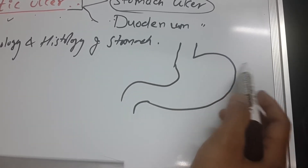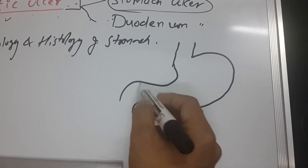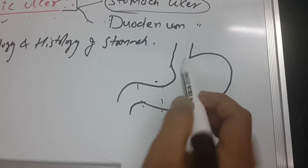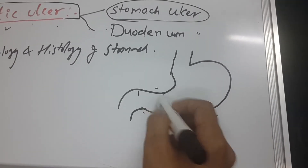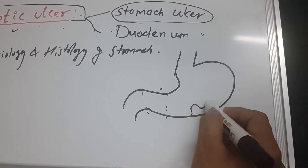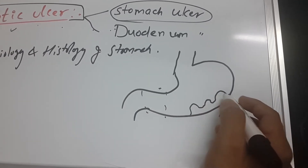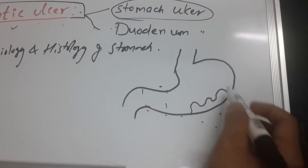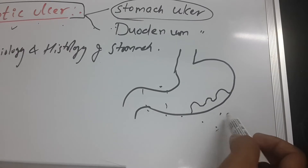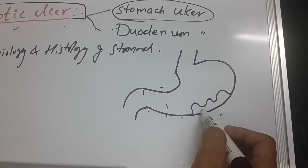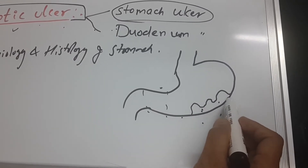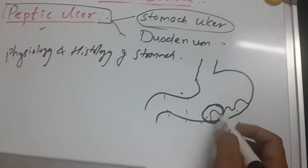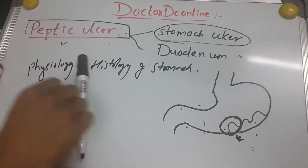As you know, the stomach has a fundus, body, and pyloric part, with greater and lesser curvatures. In terms of histology, the layers are mucosa, submucosa, muscularis, and serosa. Within the mucosa, there is a gastric pit. It is very important physiologically to understand what cells lie in this gastric pit.